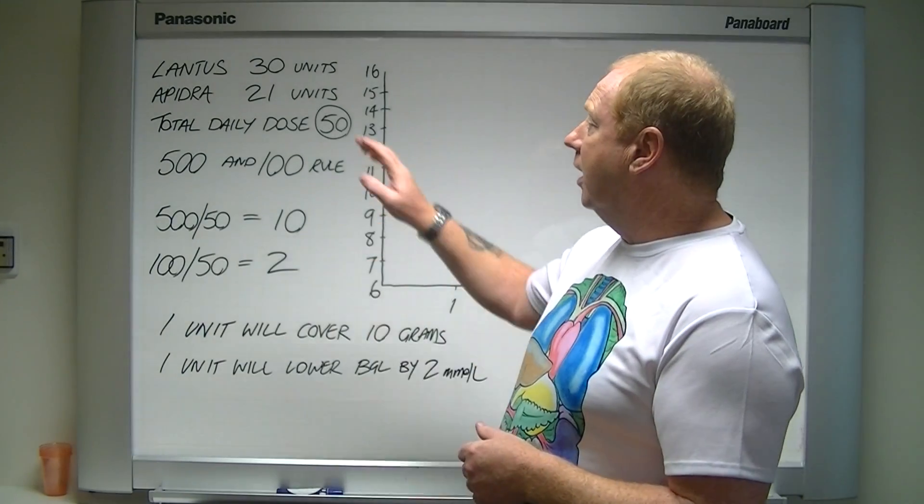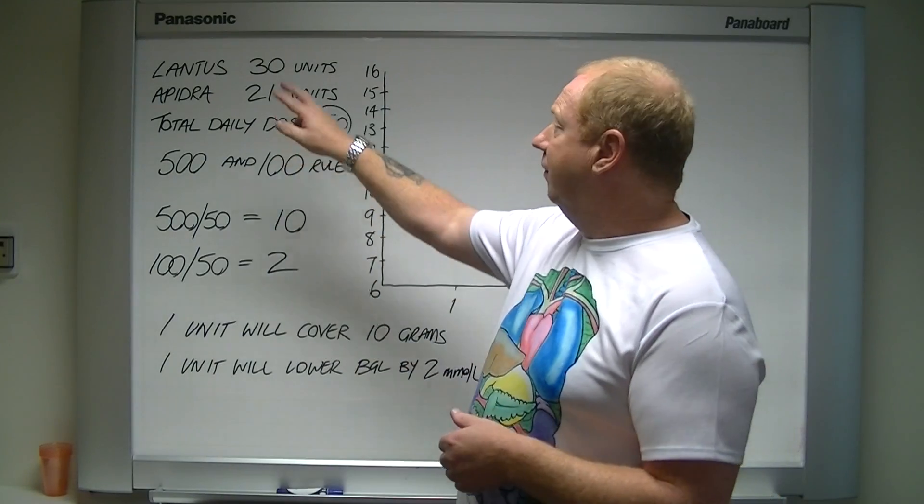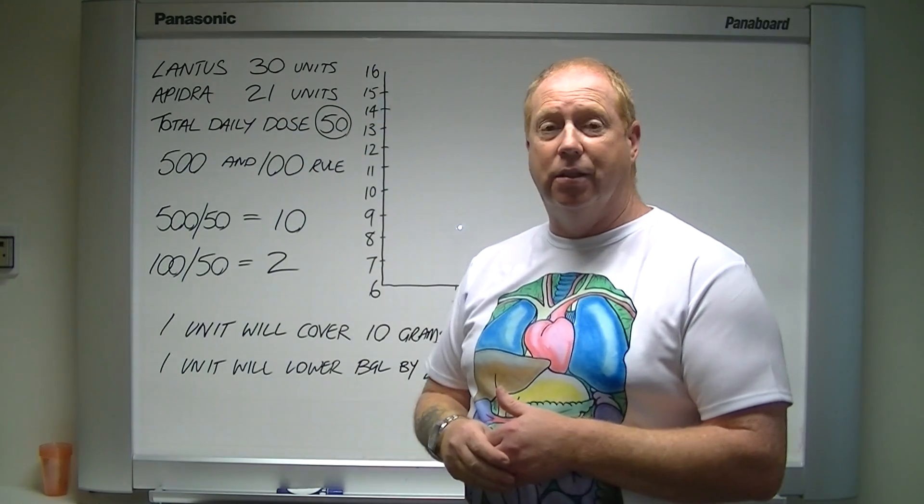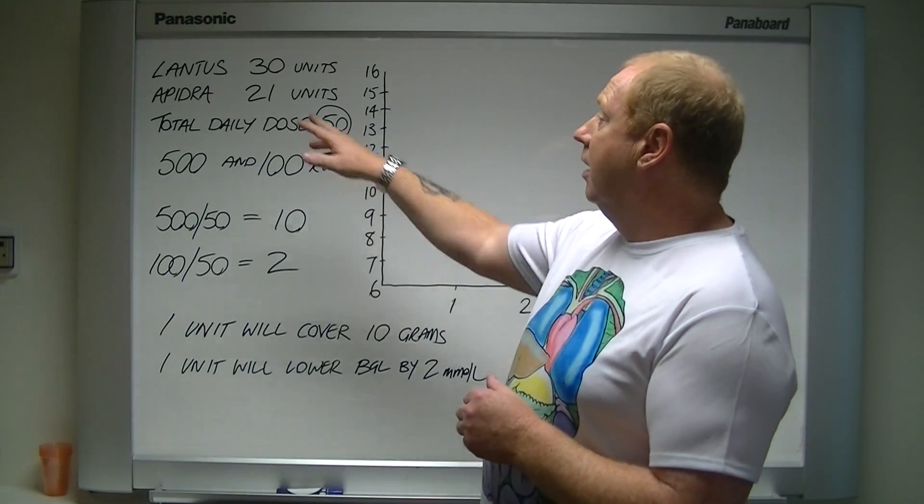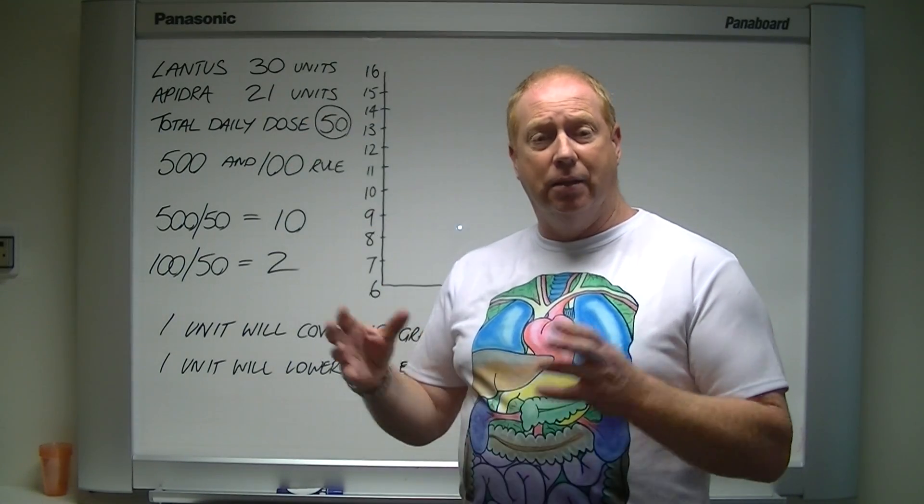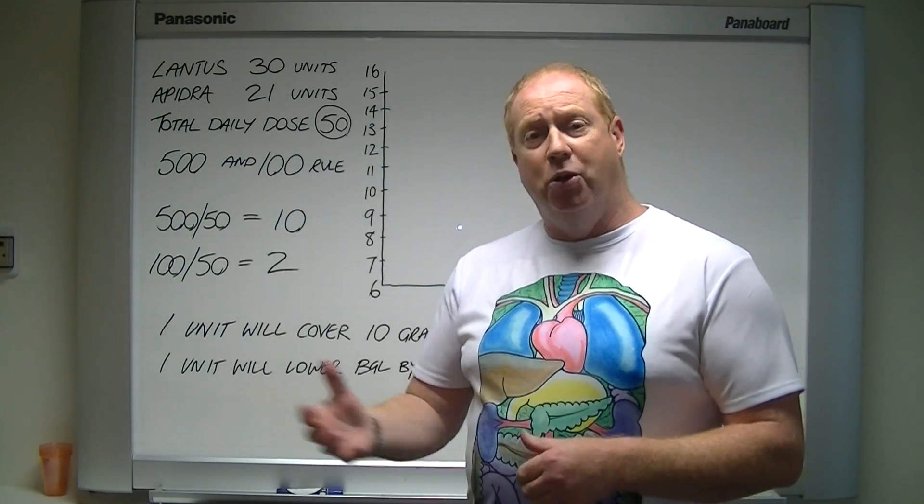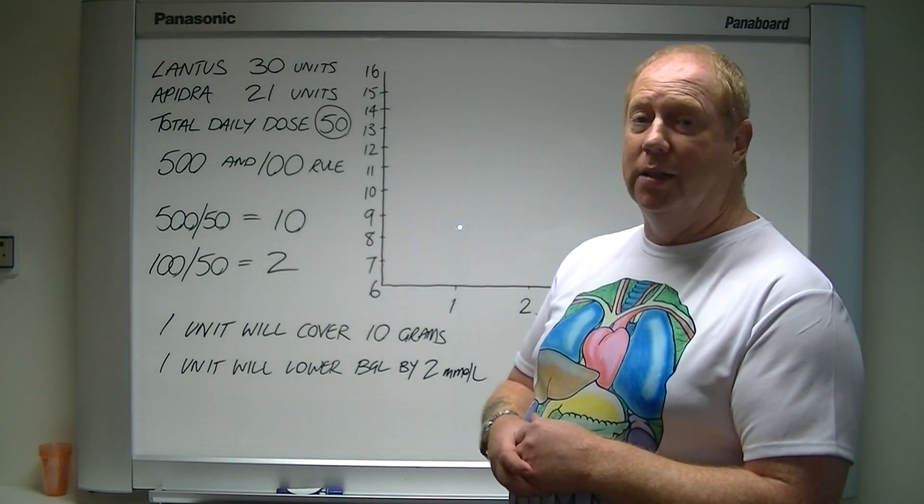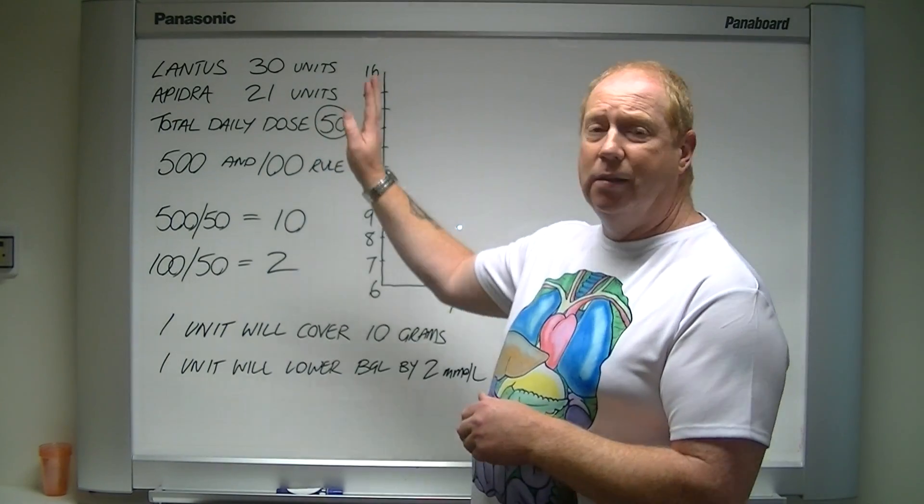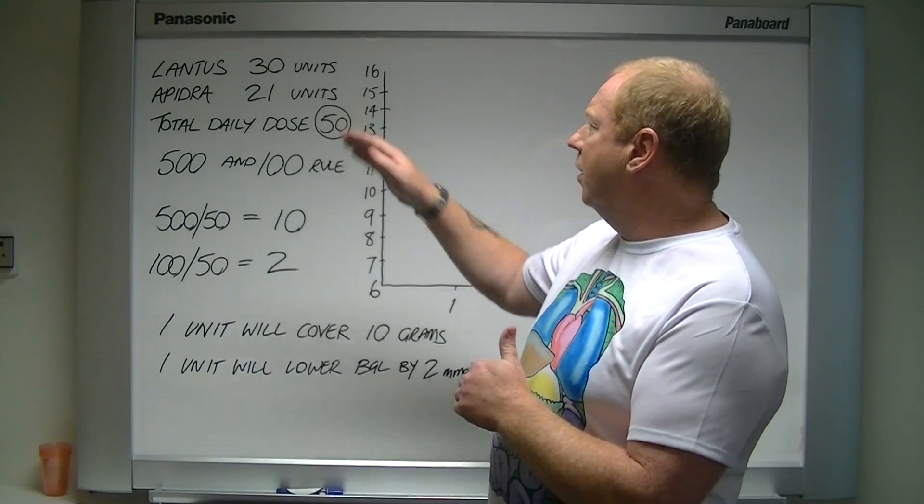So how it works is you get your basal insulin, let's say the example here, Lantus 30 units, that's what I take every night. Apidra, which is a short-acting mealtime insulin, of course we have NovaRapid and Humalog as well, the three main mealtime insulins. Apidra takes roughly on average seven units with each meal, so 21 units.